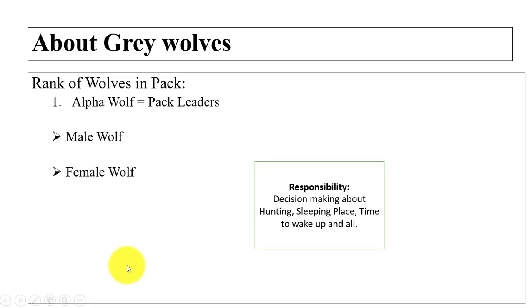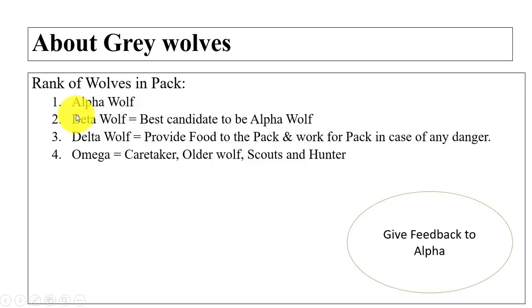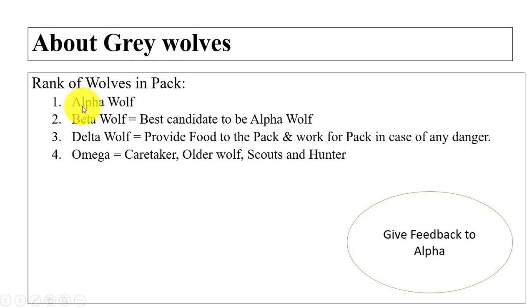The alpha wolf is the pack leader and can be male or female. Responsibilities of the alpha include decision making about hunting, sleeping places, and waking time. The beta wolf is the second best candidate to become the alpha. Beta gives feedback to alpha and helps in decision making and other pack activities.